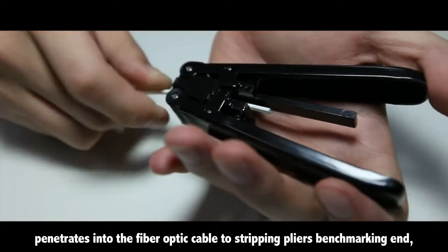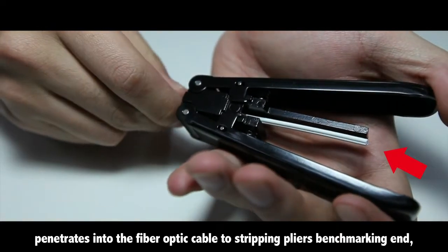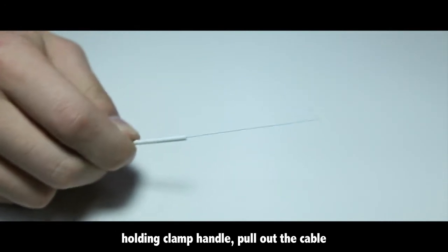Penetrate the fiber optic cable into the stripping pliers at the benchmarking end, holding the clamp handle. Pull out the cable.